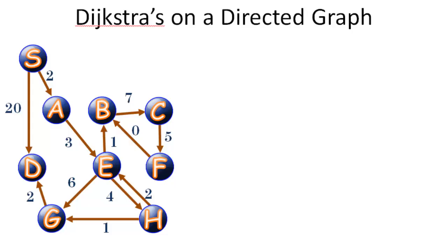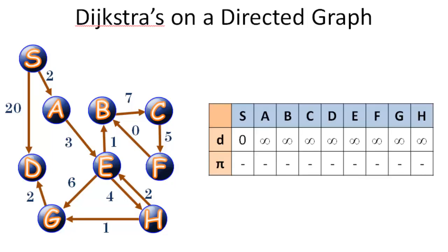So we can apply Dijkstra's algorithm on this graph to find the shortest path to each vertex from a single source. In this case we'll call that source S on the top left here. We're going to use a table to track the distance of each vertex from the source, initialized to infinity with the exception of the source itself. We'll also use a variable called pi to track the predecessor vertex.